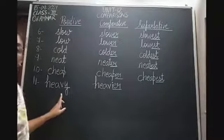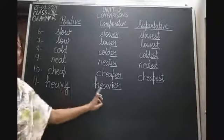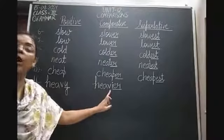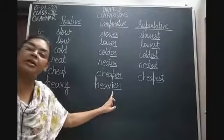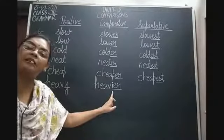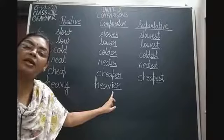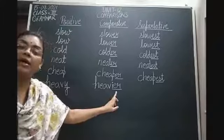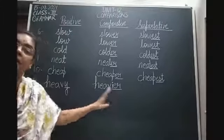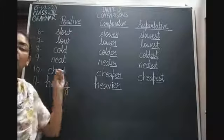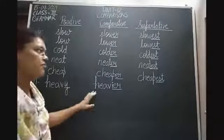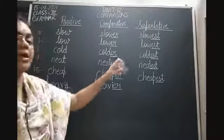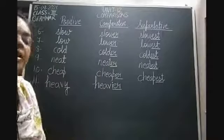Similarly, for the superlative degree of heavy, we remove the Y and add IEST. In the comparative degree we ended with IER; in the superlative degree we end with IEST. So for adjectives ending in Y, we remove Y and replace with IER for comparative, and remove Y and replace with IEST for superlative. Heavy, heavier, heaviest.